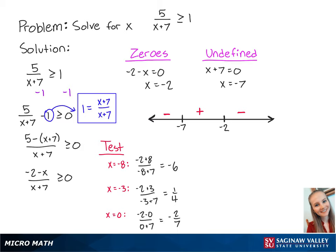To make the inequality a true statement, the left side must be greater than or equal to 0. This means that x must be between negative 7 and negative 2. So x ranges from negative 7 exclusive to negative 2 inclusive. And this is the final answer.